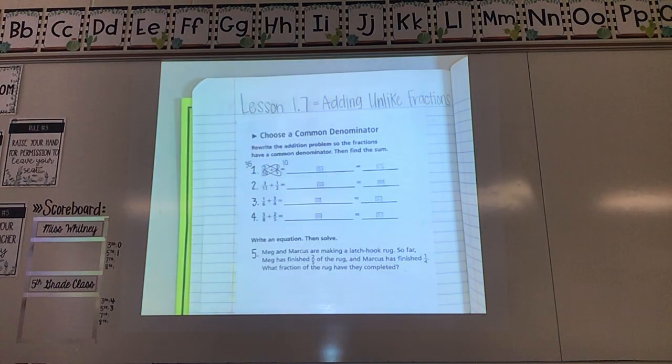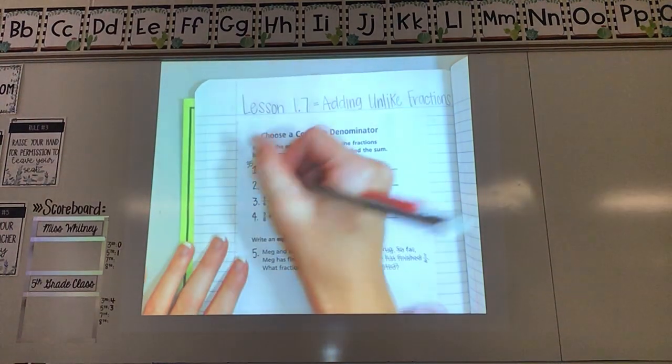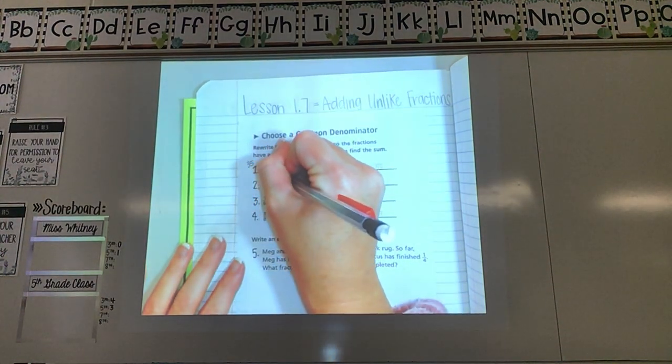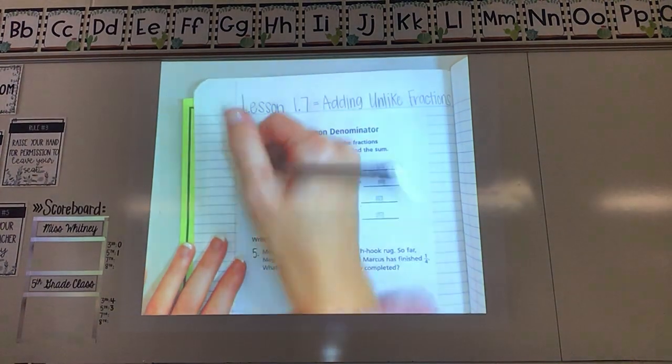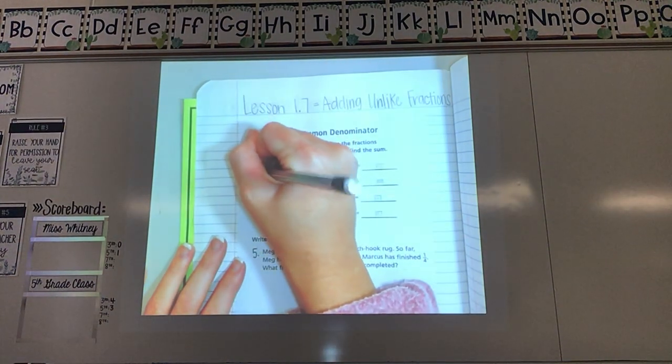After I have cross multiplied, my second step is to multiply the numbers on the bottom. So 10 times 5 is 50. I'm going to write that underneath both sides here.